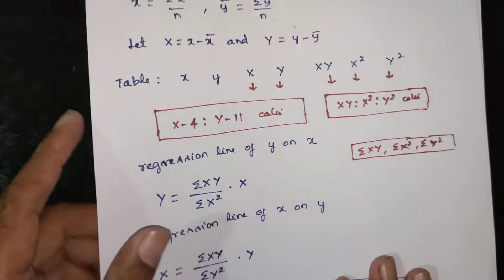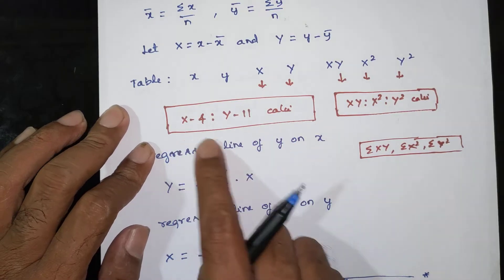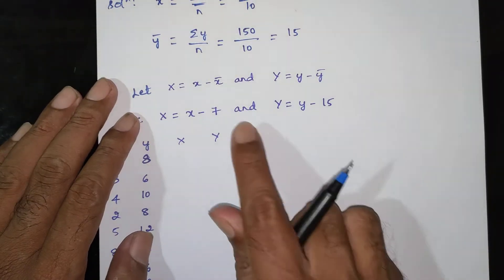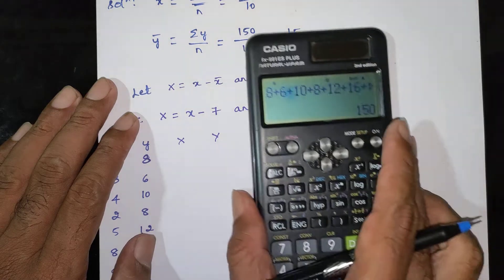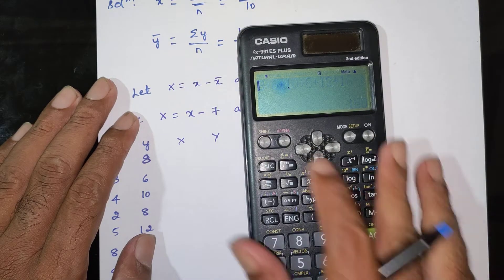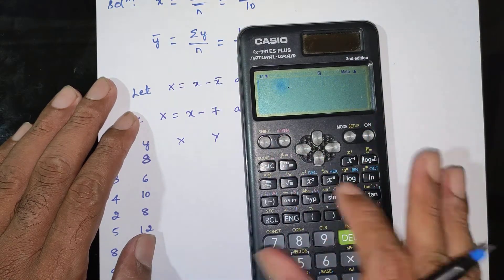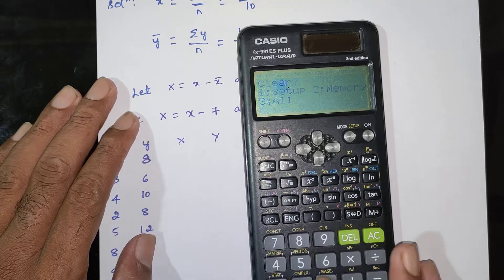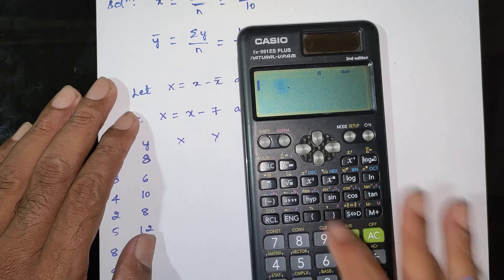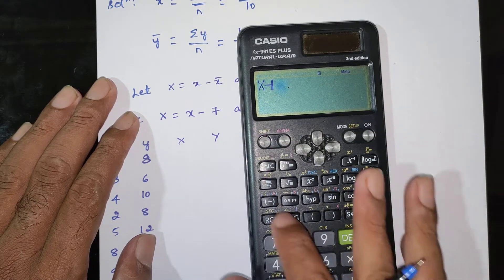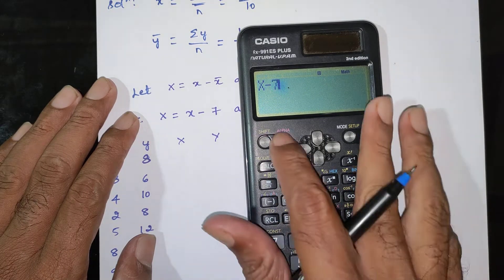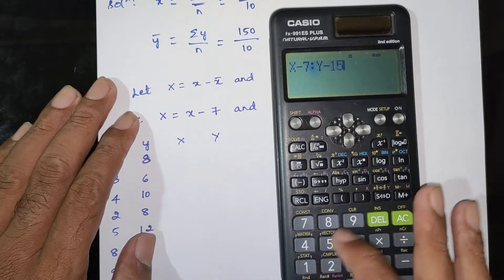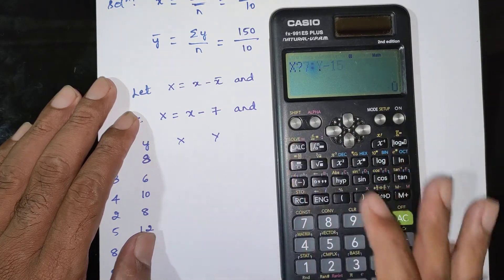We will take capital X = x minus 7 and capital Y = y minus 15. First clear, then shift 9, 3, equal. Enter x minus 7 and alpha y minus 15 and calculate.